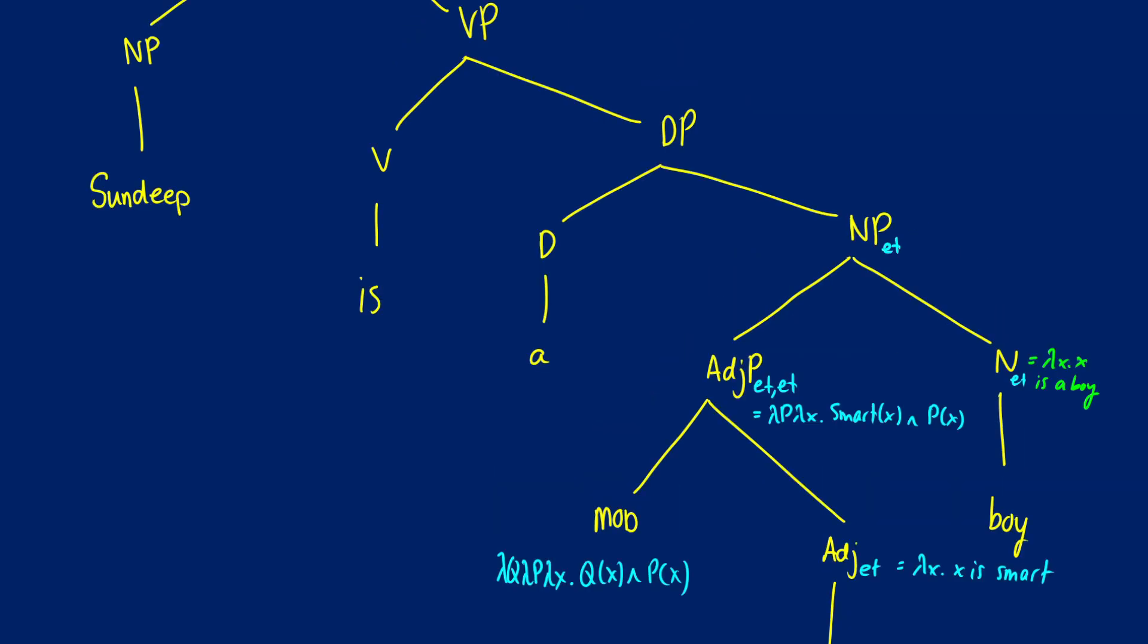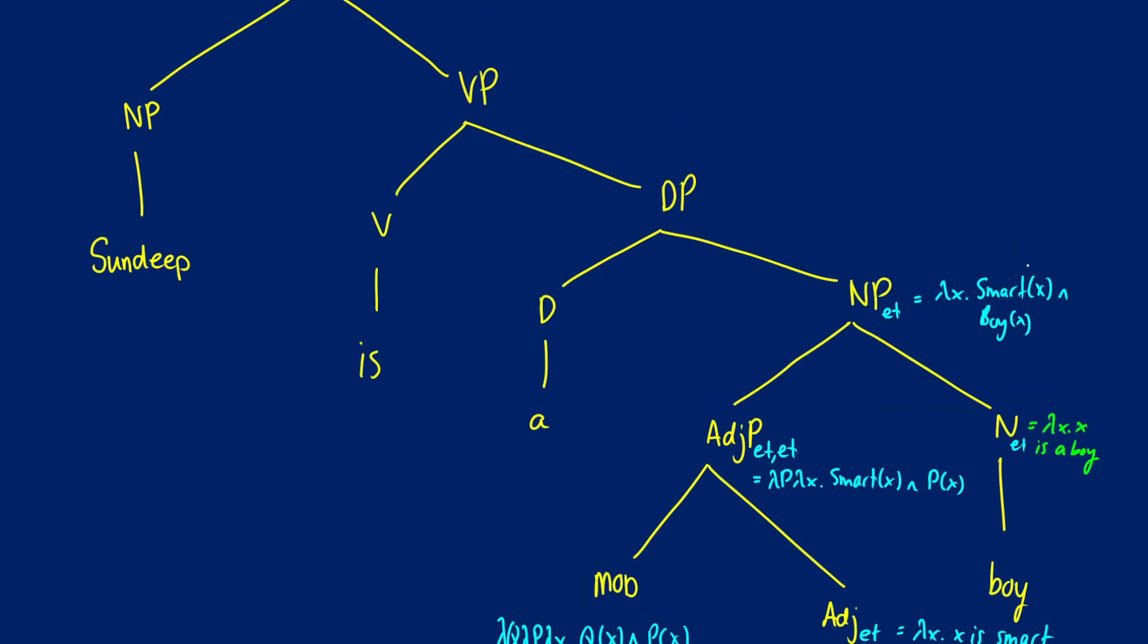Once we stick boy in there, which by the way would be lambda X dot X is a boy. Then what we're going to get at the NP node. Finally, we can do some application again because N is a type ET. So this means that our NP is going to be type ET as well, which is lambda X dot, well, now we're going to basically combine the two together. So smart X and boy X. And we can just switch between this and natural language at any time.